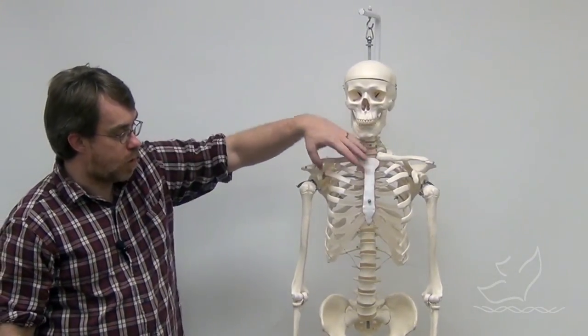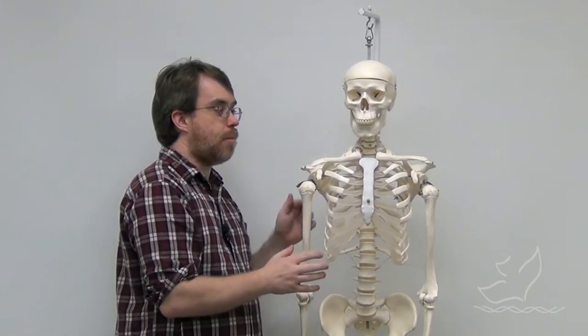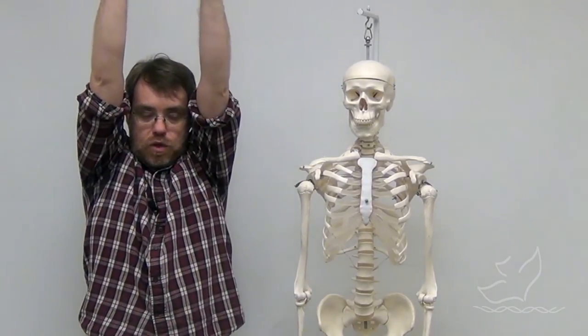And same for the rib cage. If the rib cage is narrow on the top, then it's much easier for you to hang by your arms. So all of those features taken together imply that Homo Naledi was a climber.